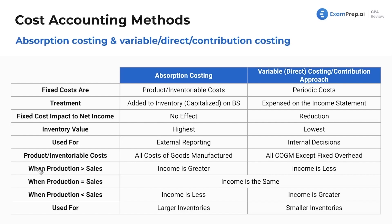When production is greater than sales — meaning we make more than we sell, so cost of goods manufactured is greater than cost of goods sold — income is greater under absorption costing and income is less under variable costing. If we produce more, we capitalize more; it all gets capitalized to production. We're not adding those fixed costs to expenses, so income will be boosted. Under variable direct, those fixed costs get expensed and income would be less.